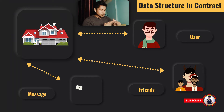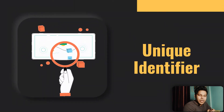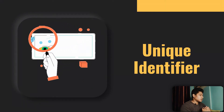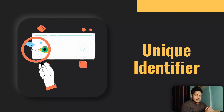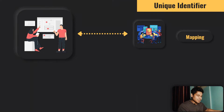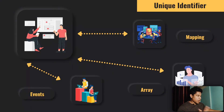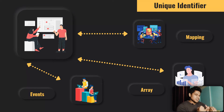So that contract revolves around these three datasets: user, friend, and messaging. Now let's move to the next slide — the unique identifier. What is a unique identifier in a Solidity smart contract? It means how we are storing data in the contract. We generally have three options: the first is mapping — you give a unique identifier and get data back. The second is array — it works similarly. The third is event. These are the three ways we can use to access and store data in a smart contract.